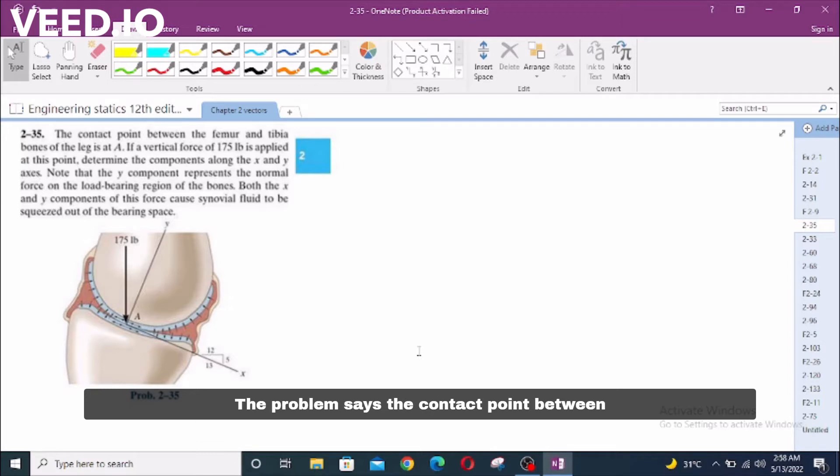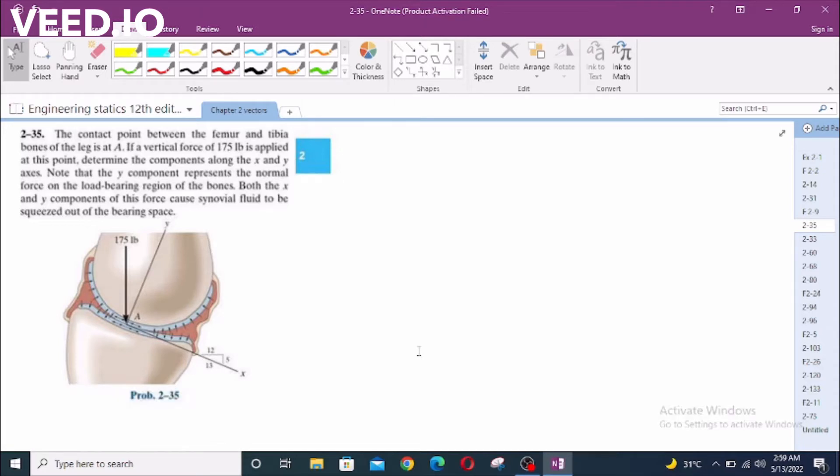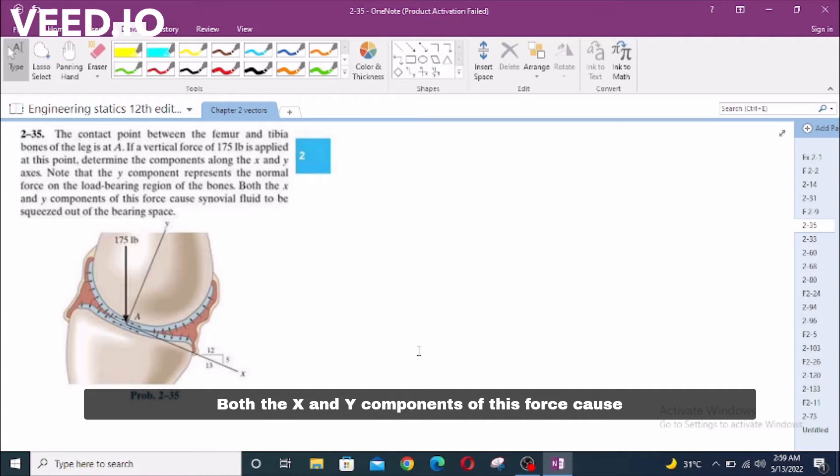The problem says: the contact point between the femur and tibia bones of the leg is at A. If a vertical force of 175 LB is applied at this point, determine the components along the X and Y axis. Note that the Y component represents the normal force on the load-bearing region of the bones. Both the X and Y components of this force cause synovial fluid to be squeezed out of the bearing space.